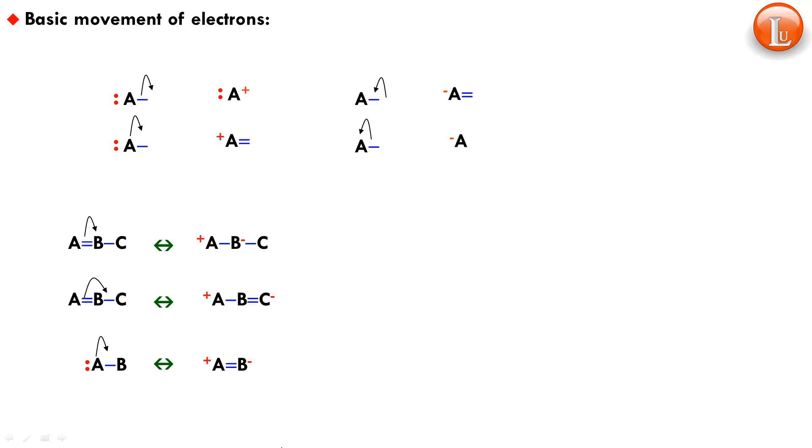So this is the basic movement of electrons. And it is this that we are going to use now in starting various types of resonance. And we will see how to draw resonating structures in each one of those cases. Thanks for watching.